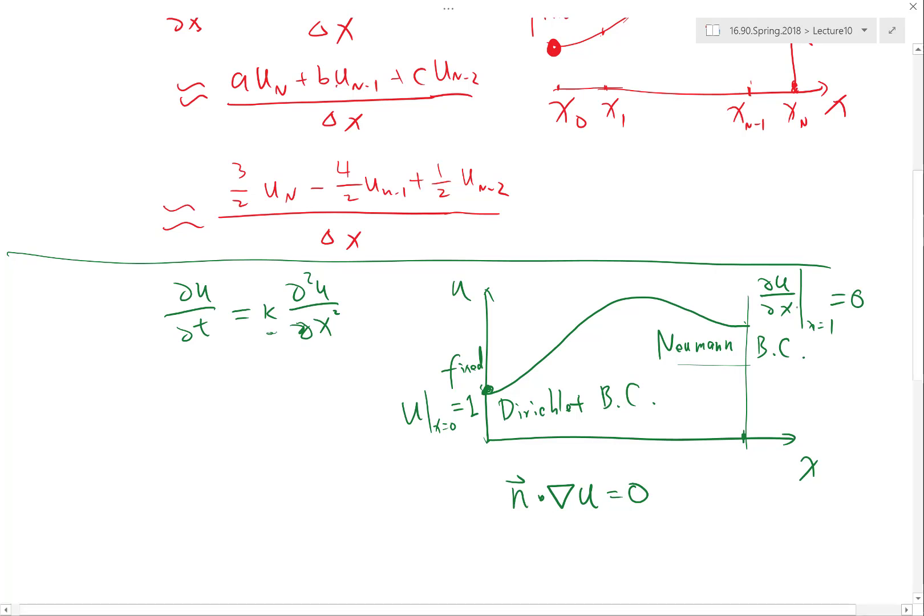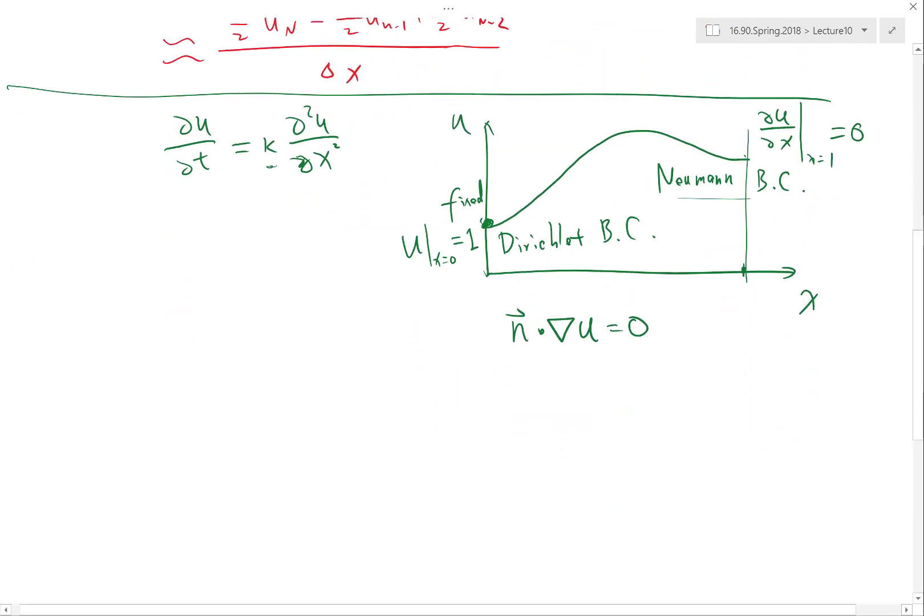Can you say that u at 1 is equal to u at the one before? Oh, okay, good point. So can I say that, if du/dx at x equal to 1 is equal to 0, let me draw the solution here. This is x equal to 1. Can I say that it leads to u_{n-1} is equal to u_n? If we do that, that is practically saying that I am approximating this boundary condition by this. I am approximating the derivative by this. And setting that to 0.